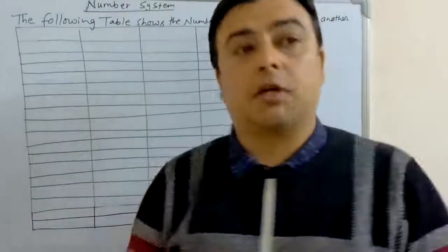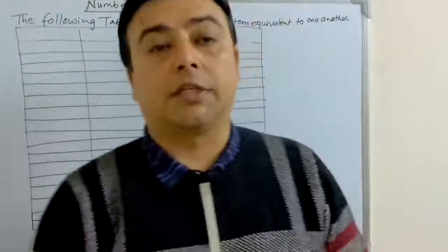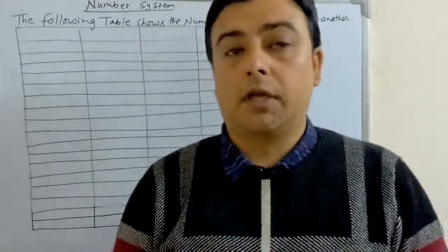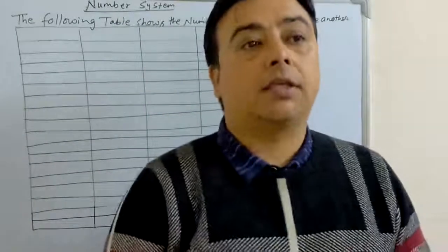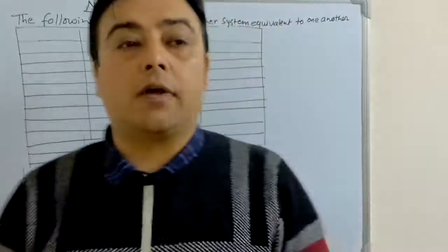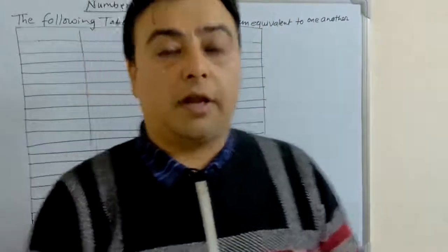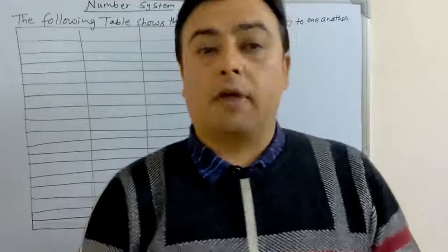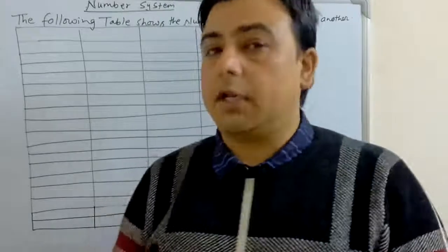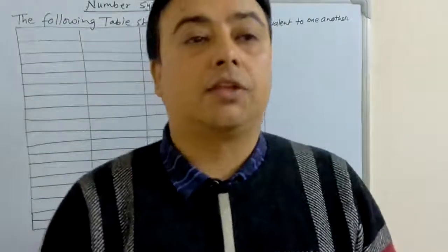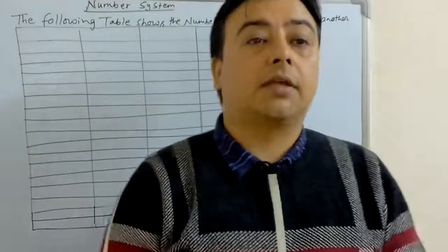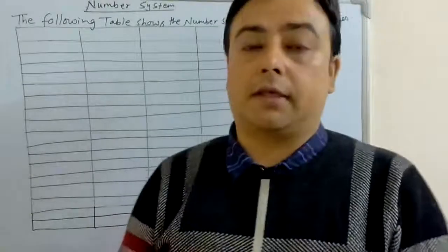A number system is a system for expressing numbers — a mathematical notation used for counting or manipulating other countable things. The representation of any number varies its values in different base or radix.